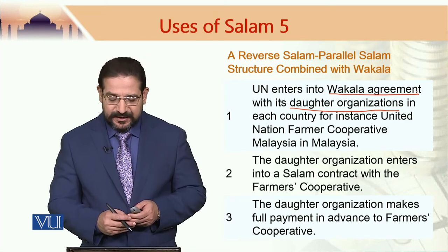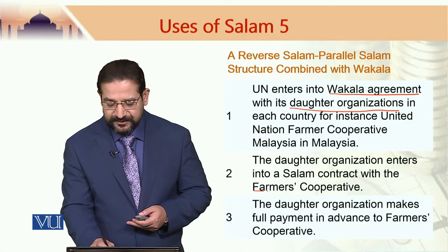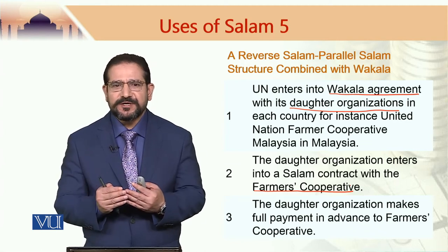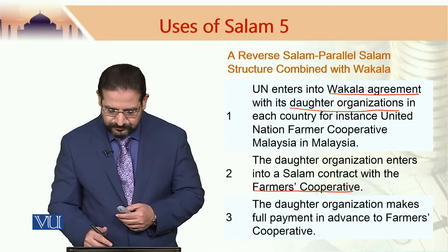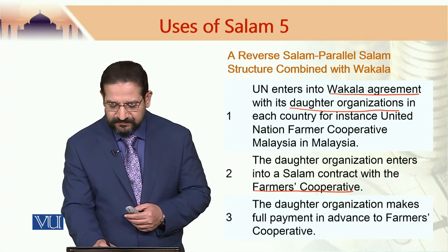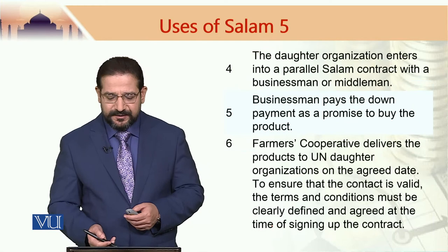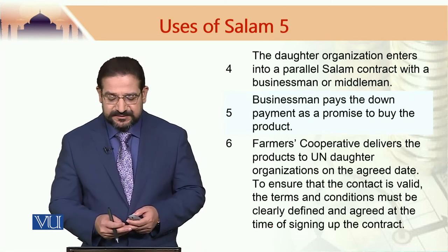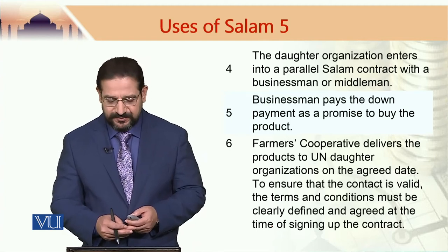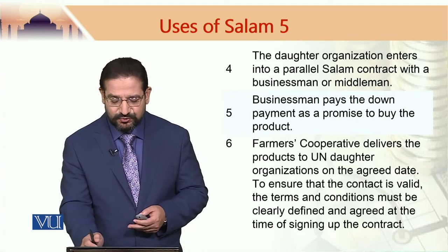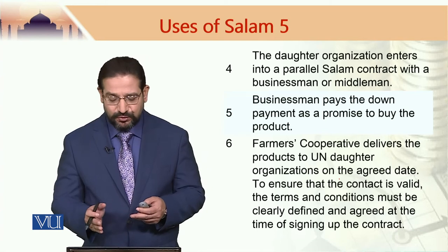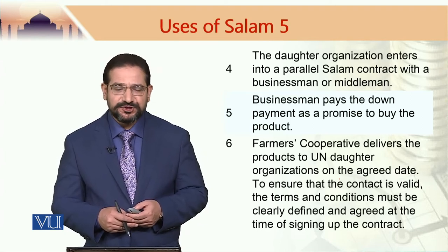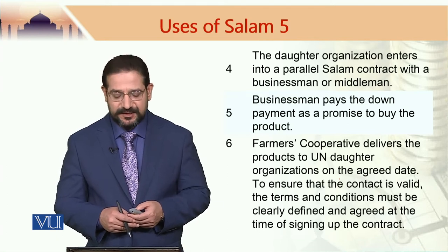The daughter organization enters into an As-Salam contract with the farmers cooperative, so from here the structure is almost the same as discussed in the previous module. The daughter organization makes full payment in advance to the farmers cooperative, and the daughter organization enters into a parallel Salam contract with a businessman or middleman. The businessman pays a down payment as a promise to buy the product. The farmers cooperative delivers the products to the UN daughter organization on the agreed date. To ensure the contract is valid, all terms and conditions are vetted by a competent Sharia advisory organization or Sharia advisory committee.